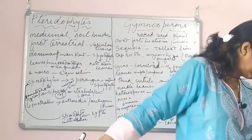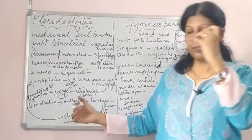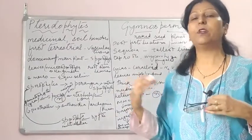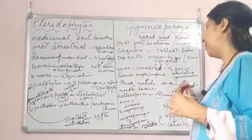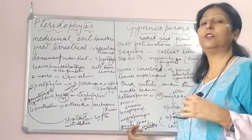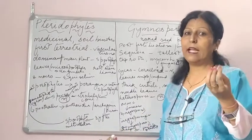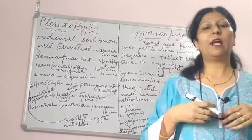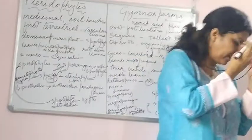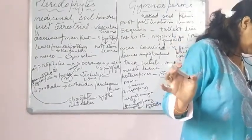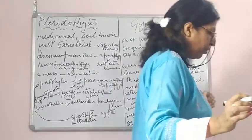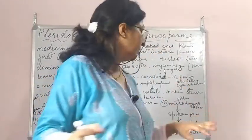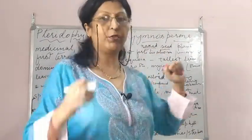When the male gametes, the pollen grains, are released - they come from two different plants - they enter into the archegonium containing the ovule. The egg and pollen fuse to form a zygote. The zygote develops into an embryo and the ovules develop into seeds. That is what gymnosperms produce.